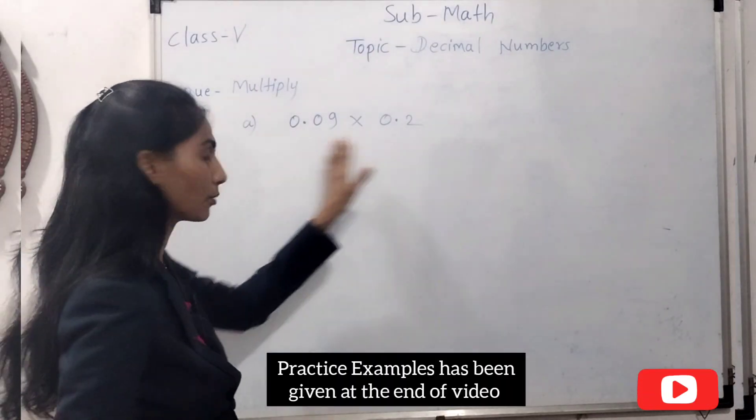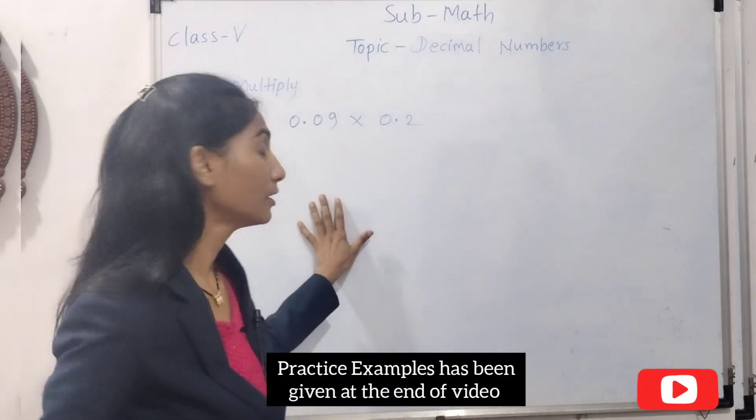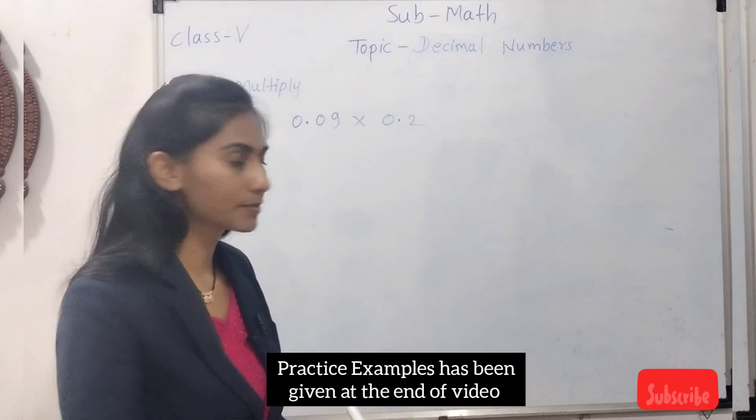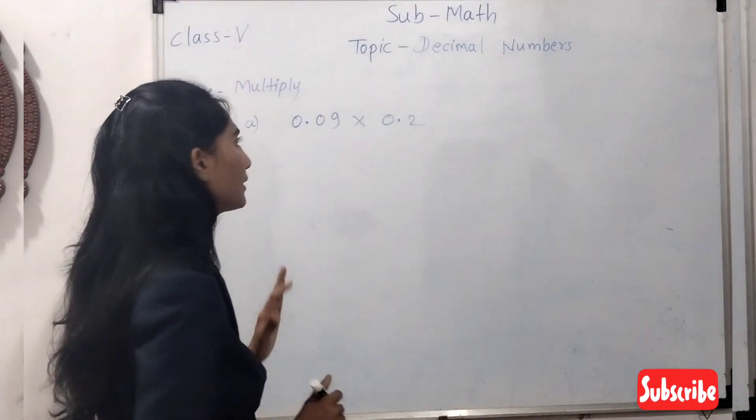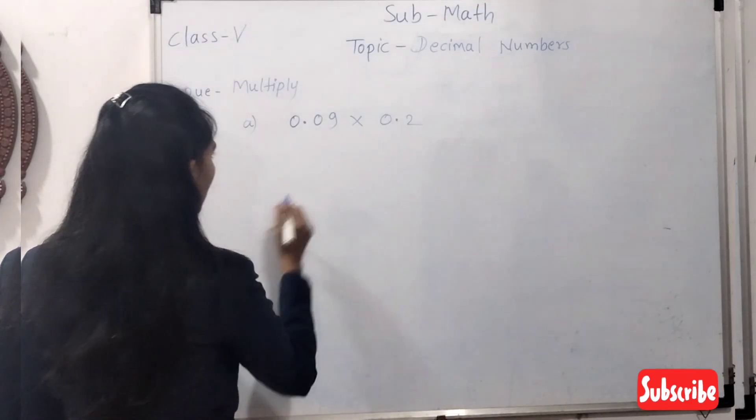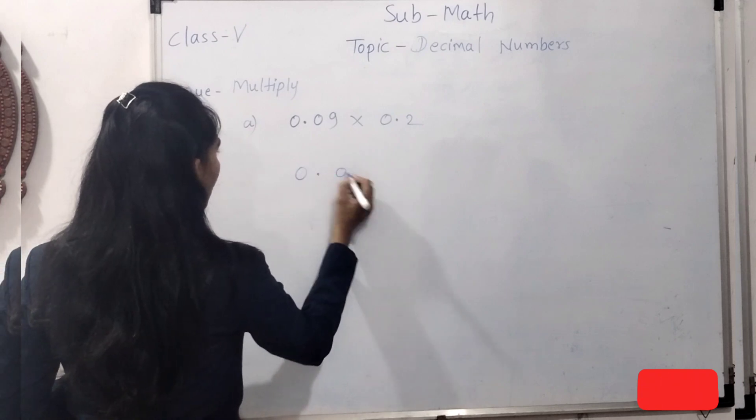Now we are going to find multiplication of these two decimal numbers. You have to follow some steps while multiplying the decimal numbers. First, write down these two numbers properly.